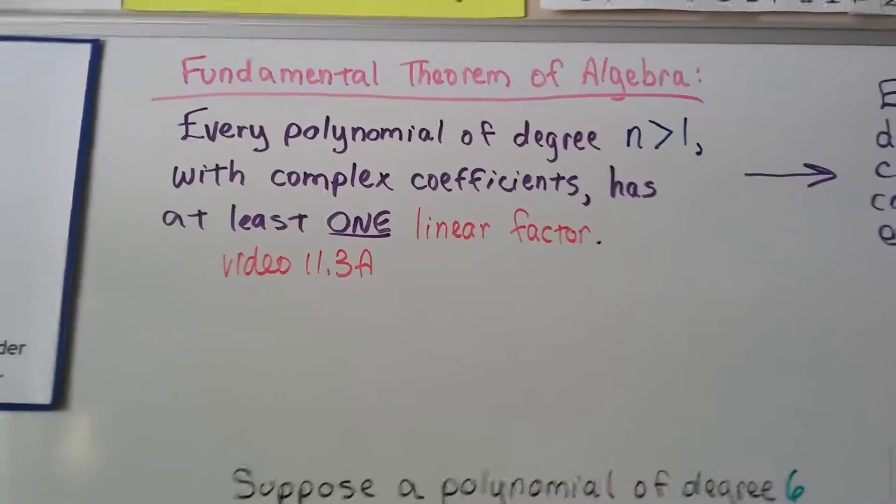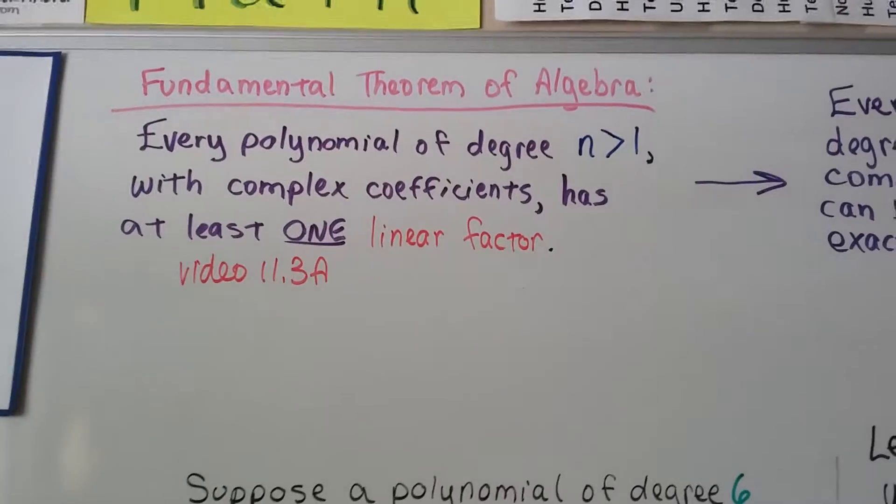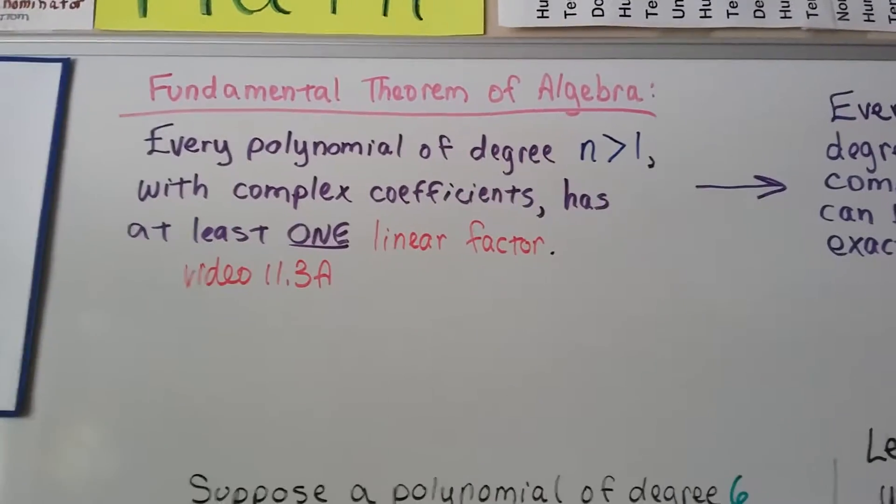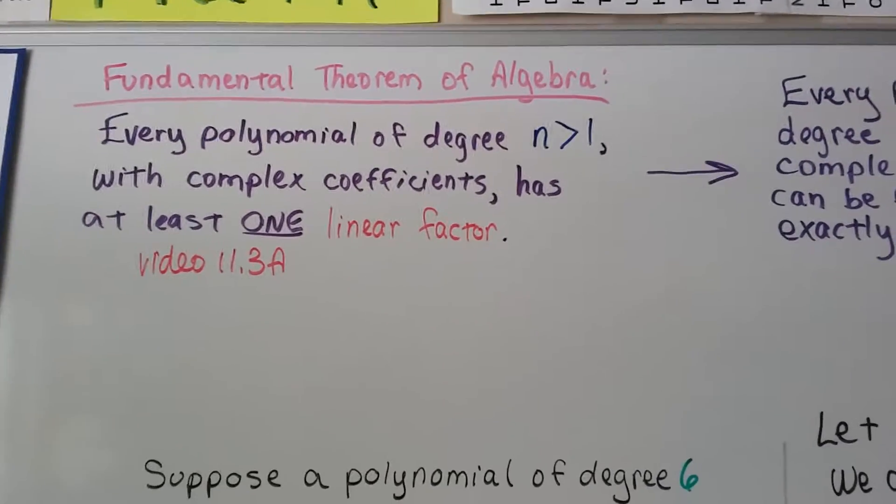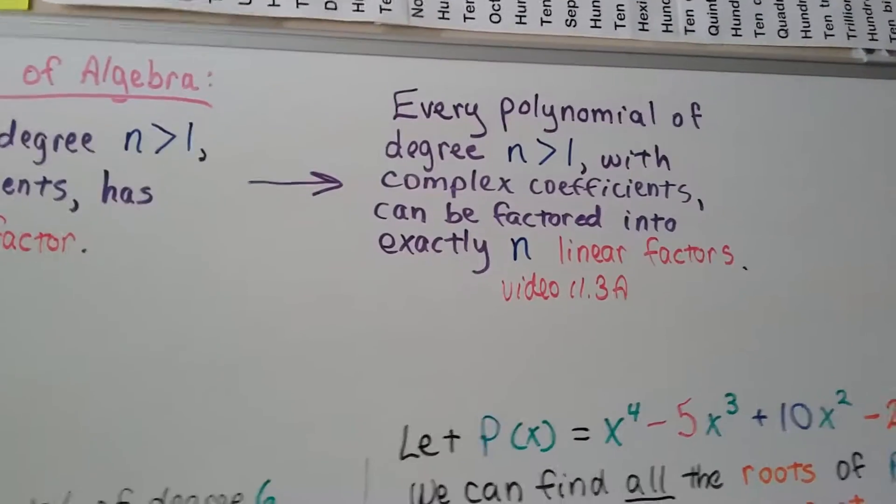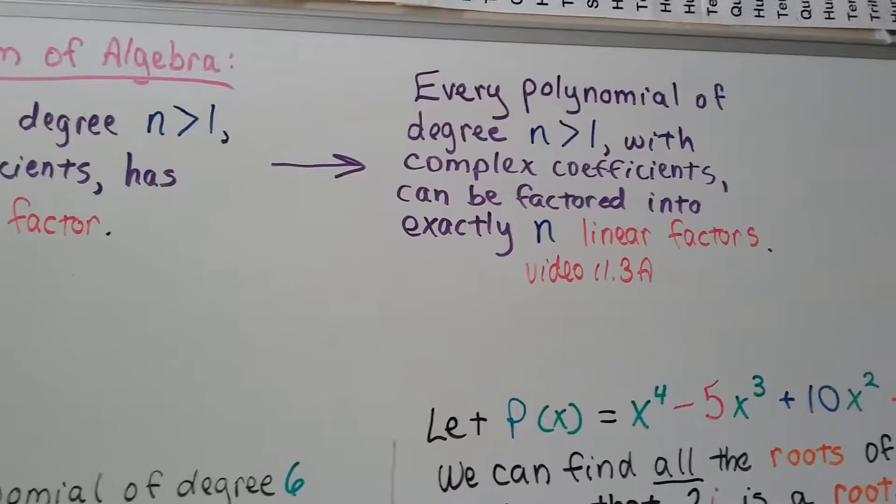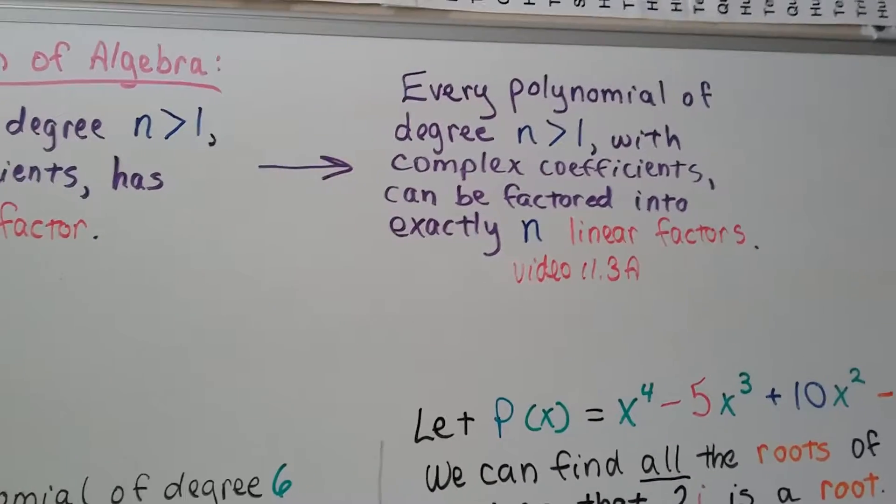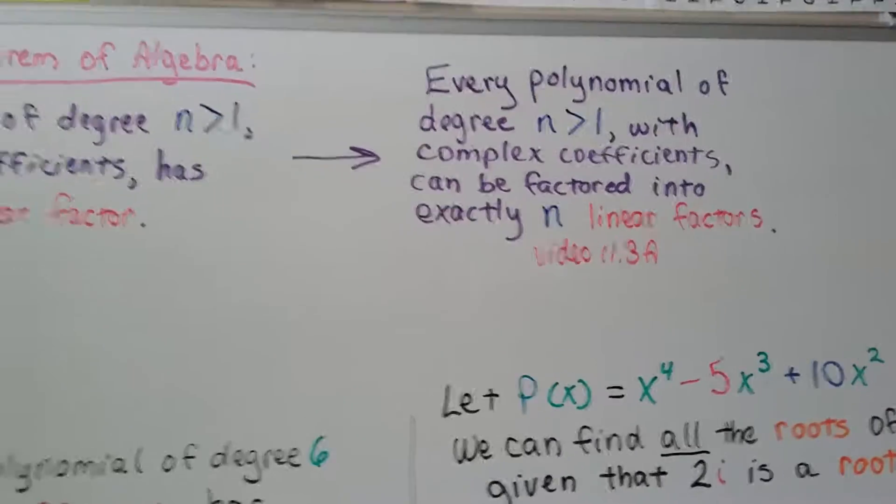I want you to remember from our previous video, we talked about the fundamental theorem of algebra. We had these two other theorems that every polynomial of degree n greater than 1 with complex coefficients has at least one linear factor. And it led us to this theorem: Every polynomial of degree n greater than 1 with complex coefficients can be factored into exactly n linear factors. Keep this one in mind as we cover this next bit of information.